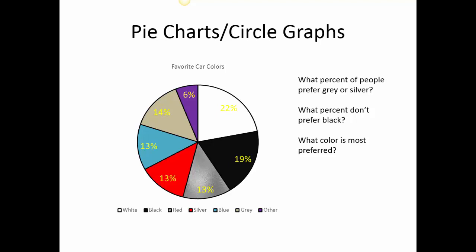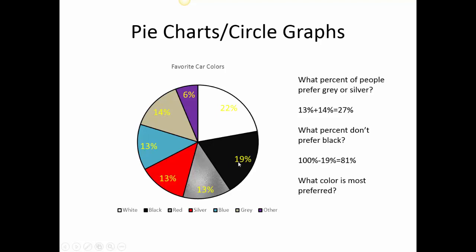So I want you to read through this, answer these three questions, and then come back. So what percent of people preferred gray or silver? So remember to look down here, the gray was 14 and the silver, which was really red, was 13. So 14 and 13 is 27. What percent don't prefer black? Well, black is really the black color. So 19% of them prefer black. So I would do 100 minus 19 is 81%. And then what color is most preferred? White.